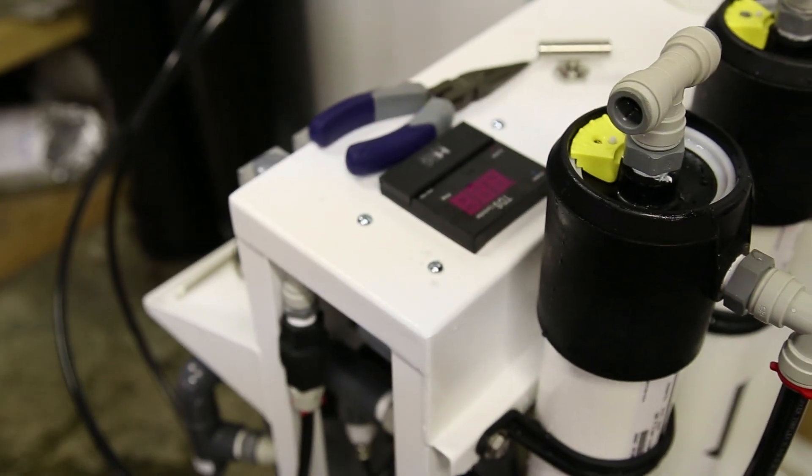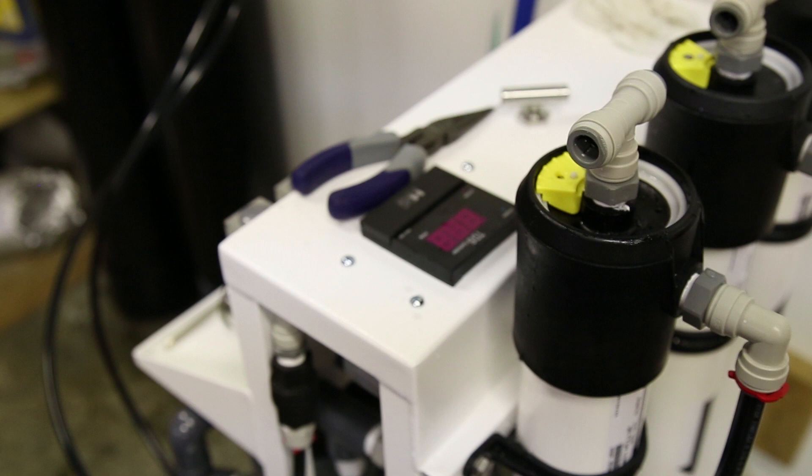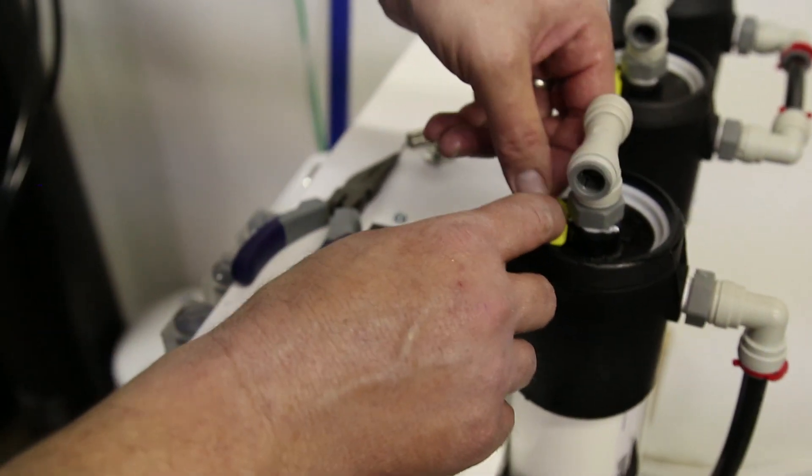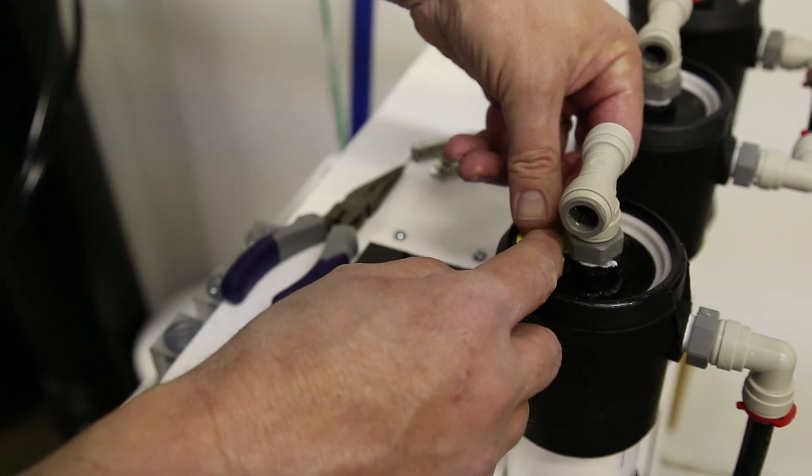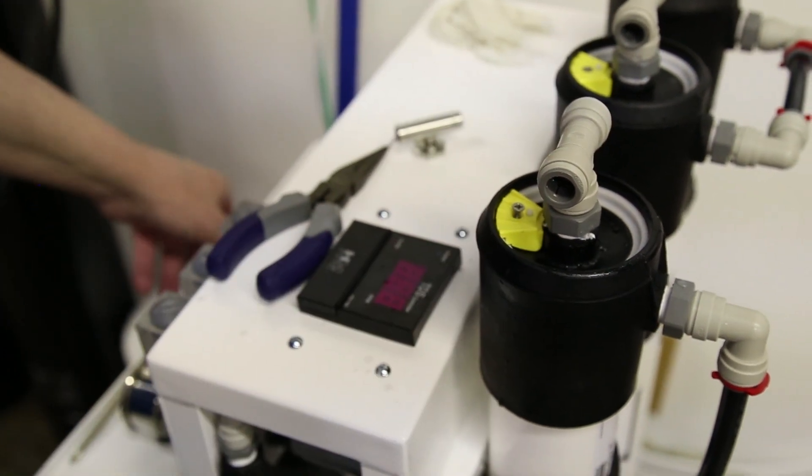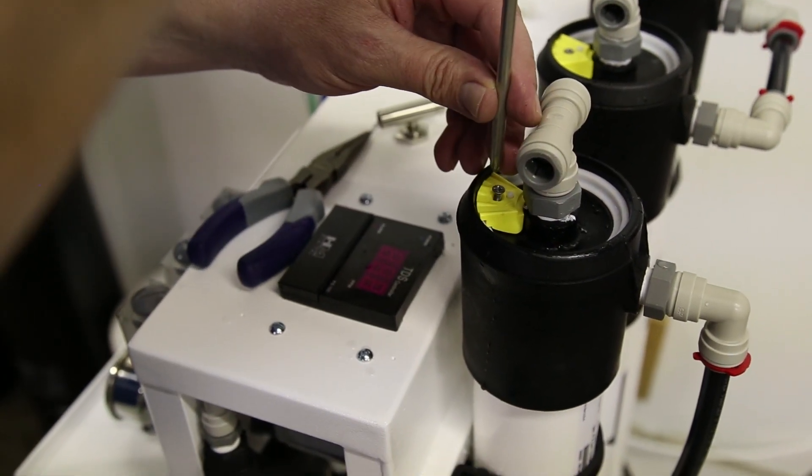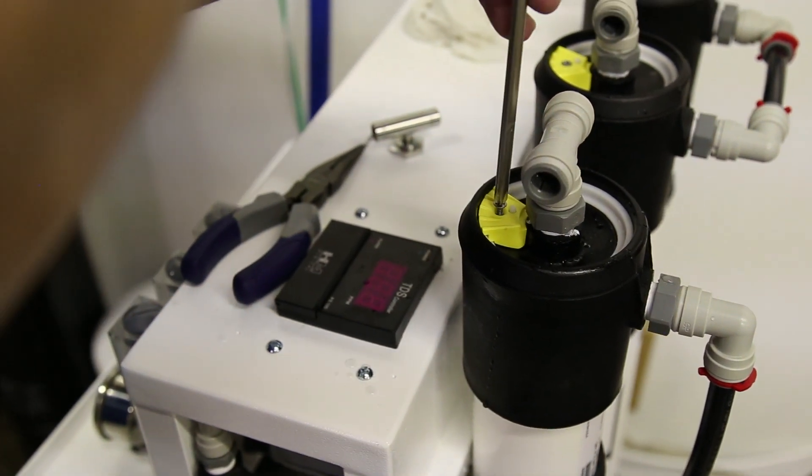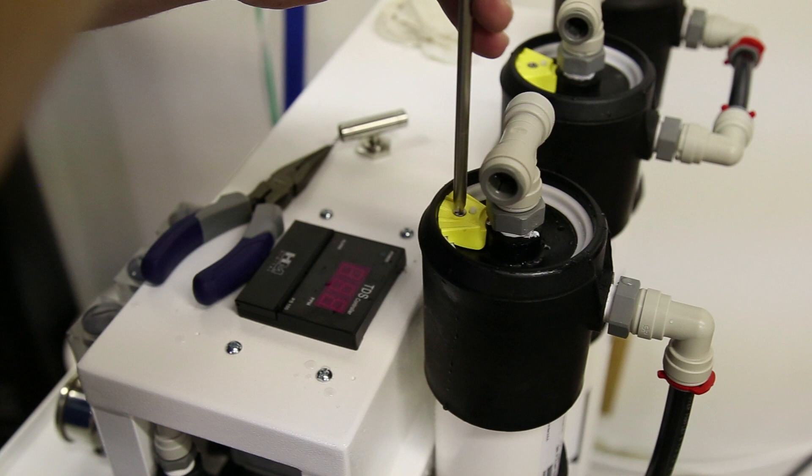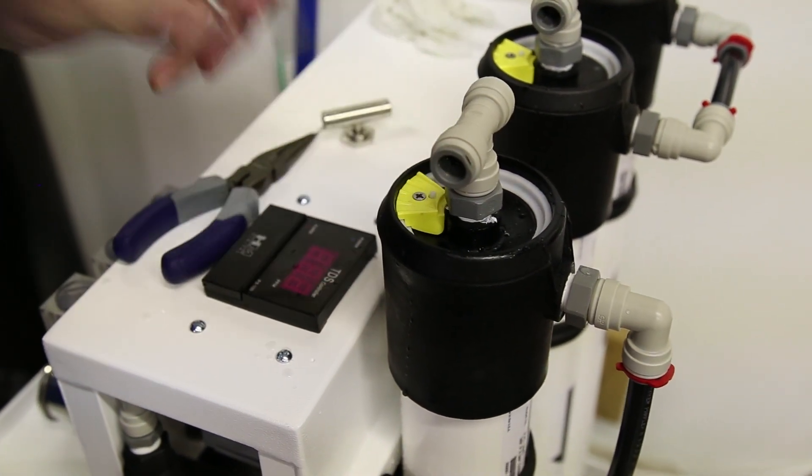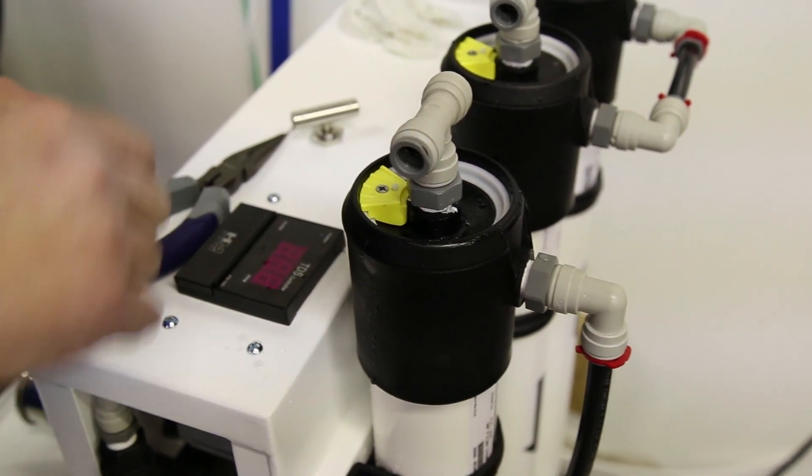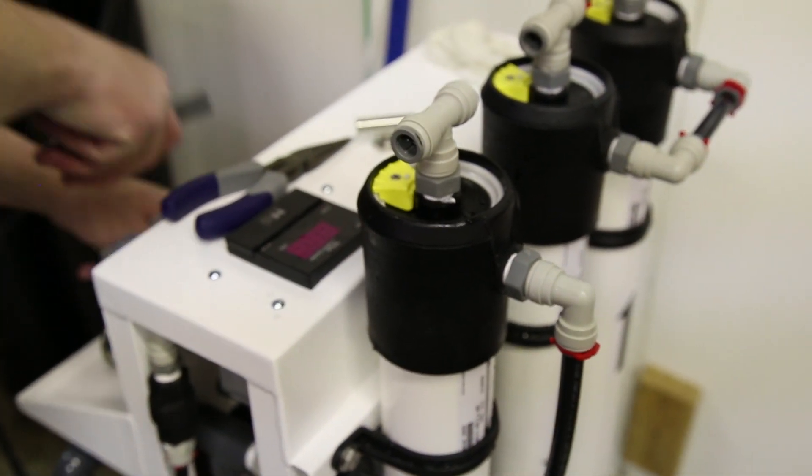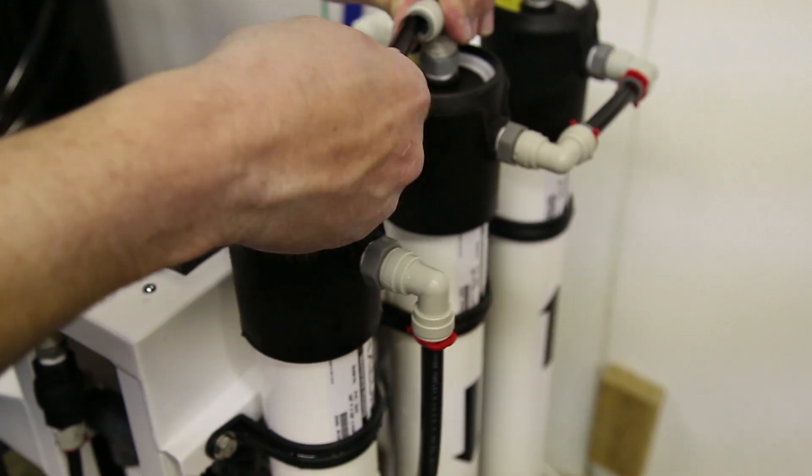Once we've put it back in there, we can put our pie-shaped piece back on and then we'll put our screw in there. Tighten it down.